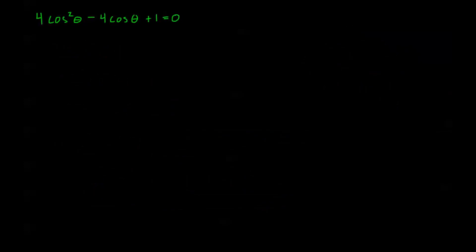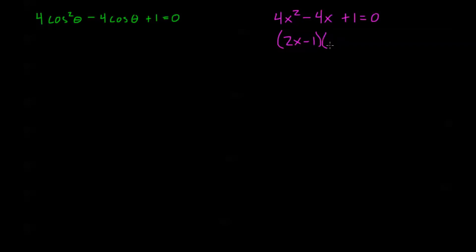Let's take a look at another one: 4 cosine squared theta minus 4 cosine theta plus 1 equals 0. This is a quadratic equation in cosine. We handle it the same way as a quadratic in x. If we had 4x squared minus 4x plus 1 equals 0, we'd factor it as 2x minus 1 times 2x minus 1. Foiling that out gives 4x squared minus 4x plus 1, confirming the factorization.